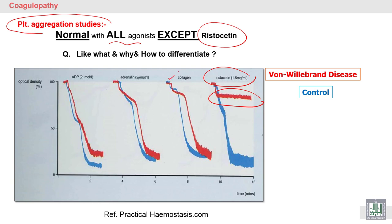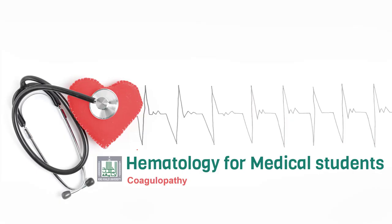With collagen, adrenaline, and ADP, the patient result is normal, similar to the control. This pattern is very similar to Bernard-Soulier syndrome, and in the next slide we will differentiate between Von Willebrand disease and Bernard-Soulier syndrome.